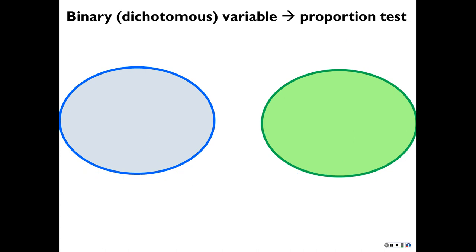So same process for proportion tests — it's just that we're looking at proportions. Sometimes you say there are just counts in each group, or sometimes you can conceptualize this as binary or dichotomous data, meaning each person can only have one of two possible values. Anything that's just two possible values that each individual can only have one of two possible outcomes — that's a binary or dichotomous variable.